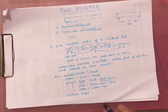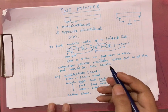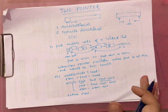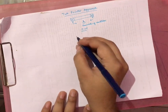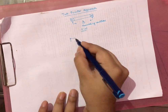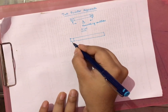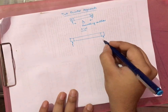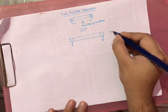This returns the middle node of the linked list. Now for the opposite directional two pointer approach, consider a sorted array. We put pointer i at the start and pointer j at the end.